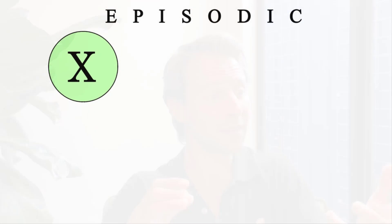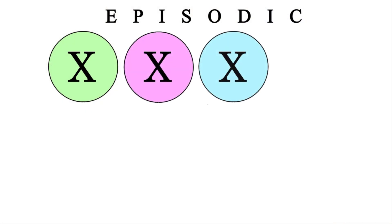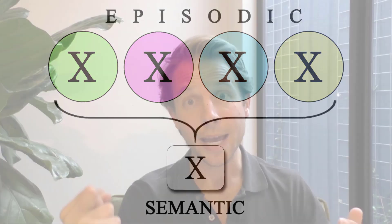So what does this mean for us? Idea number one: if semantic memories are created from episodic memories, then exposure and repetition are key in early learning. It's not enough just to give somebody one exposure to a fact. We need to build multiple episodic memories surrounding the same ideas and information if we ever hope for kids to suss out those semantic facts and build that usable knowledge we can go deeper with.